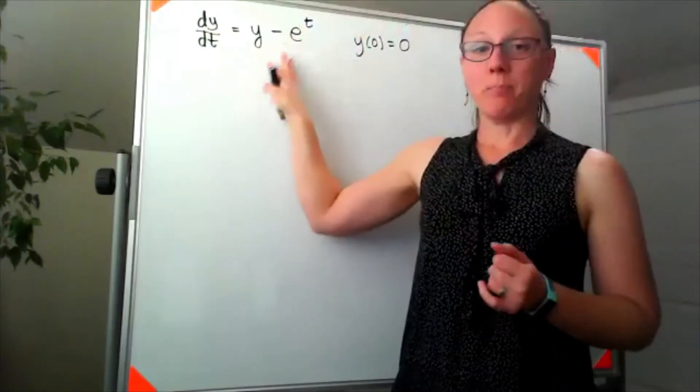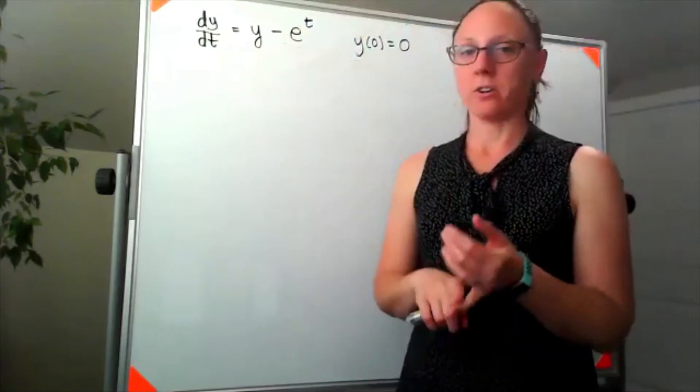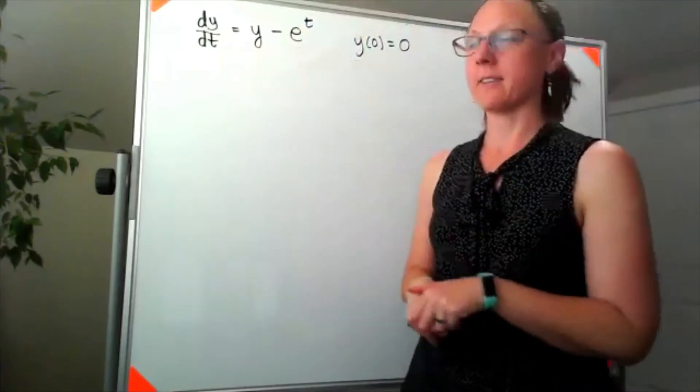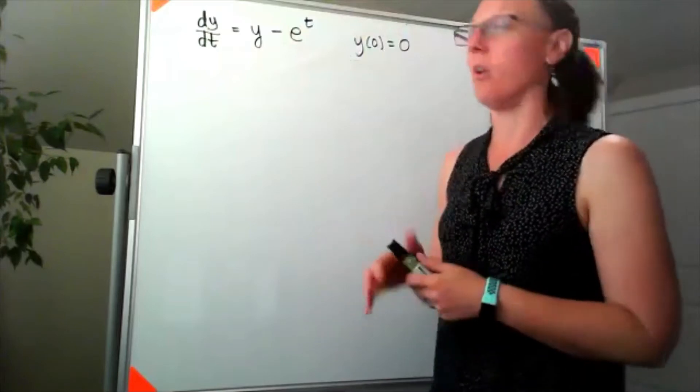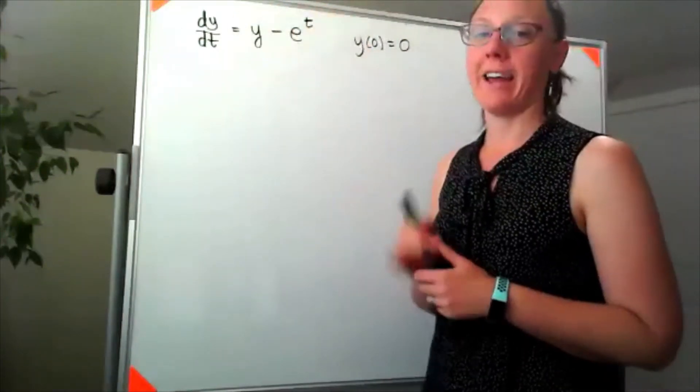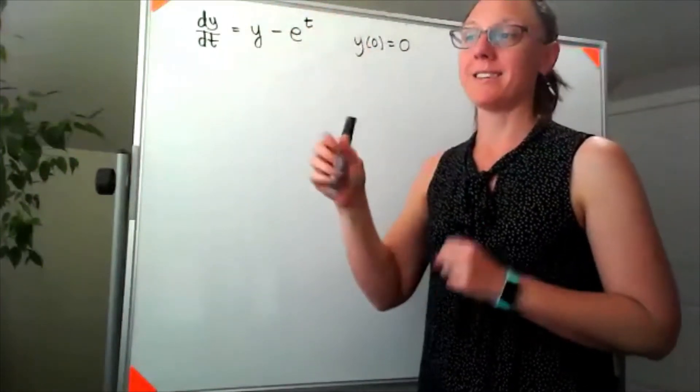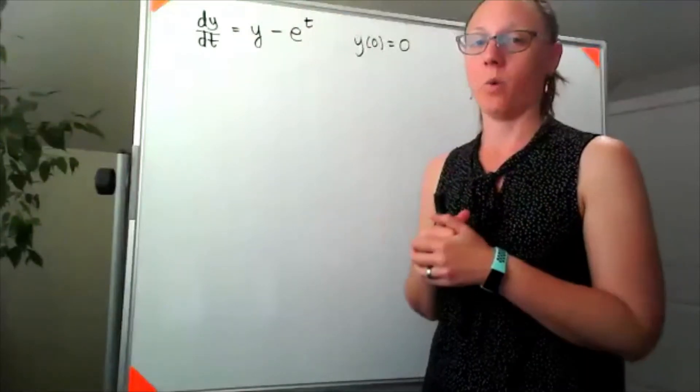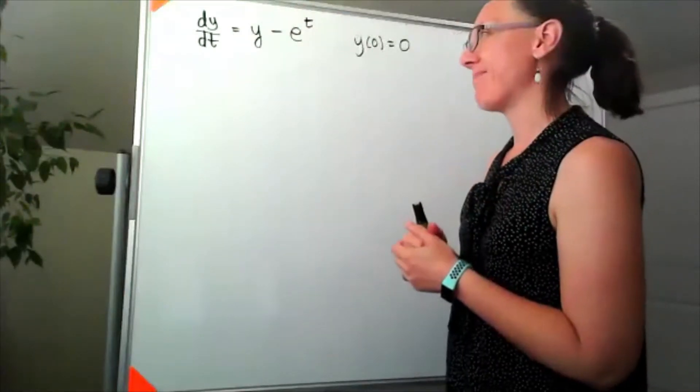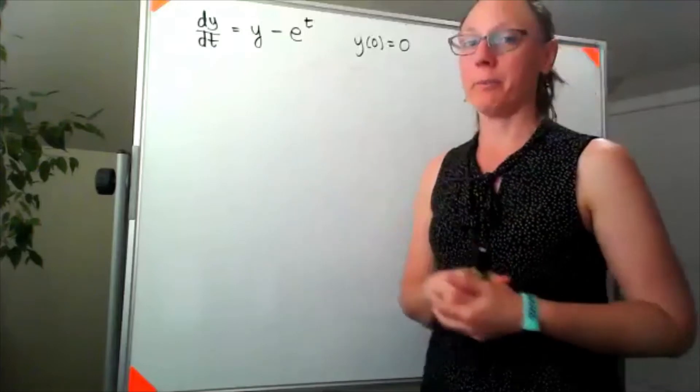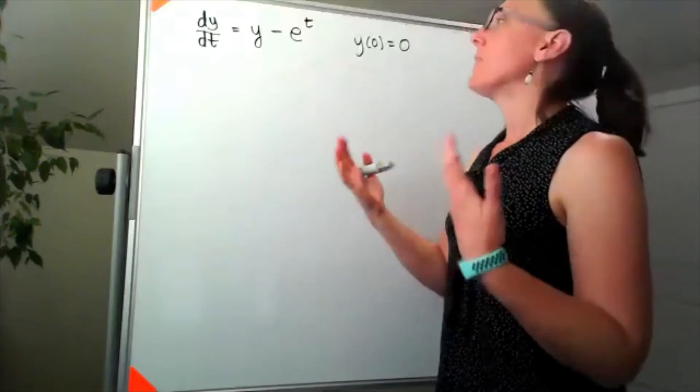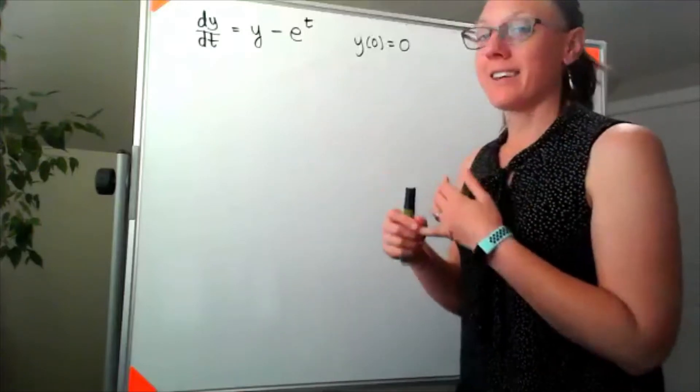I've got y's and t's both, so it is not pure time and it is not autonomous. So the next thing I want to check is, is it separable? Can I write this side as something with t's times something with y's? And the answer is no, there's no way for me to do that.